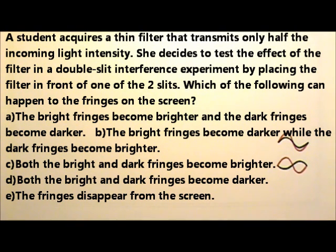As for the destructive interference, when peak meets a smaller trough, the displacement does not cancel completely. Therefore the dark fringes would not be as dark. So the answer is B.